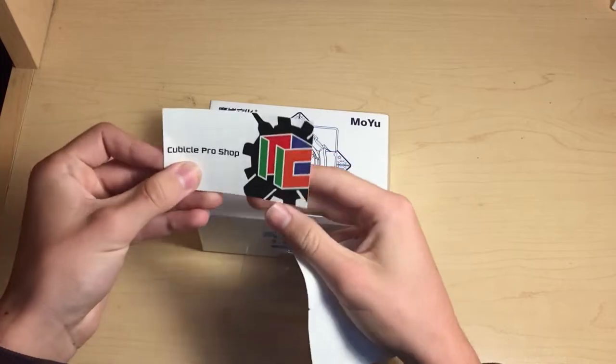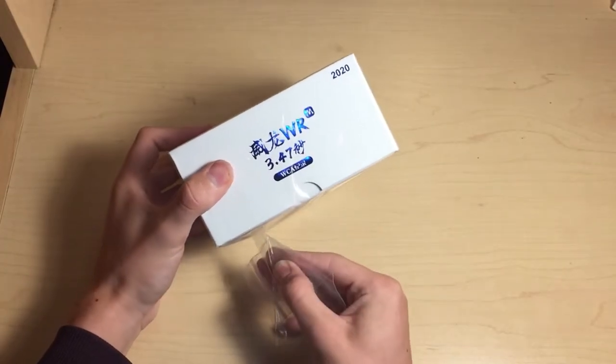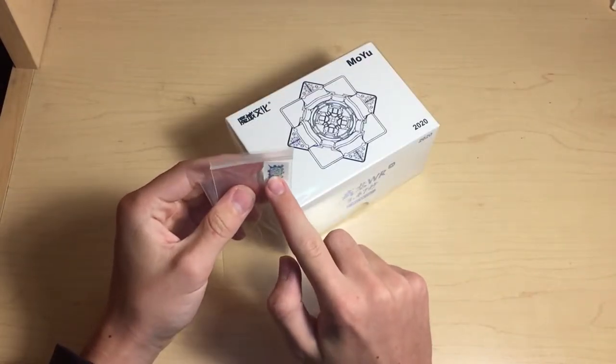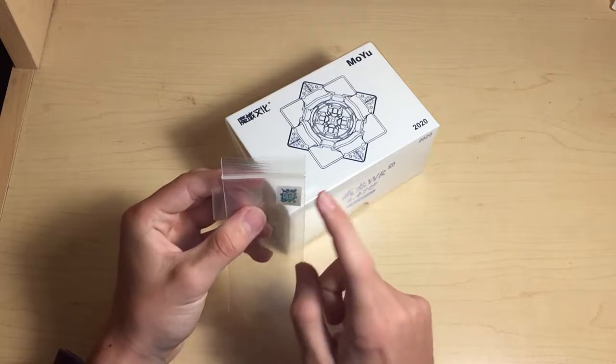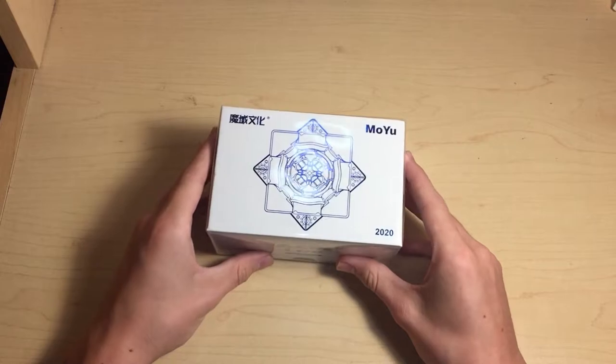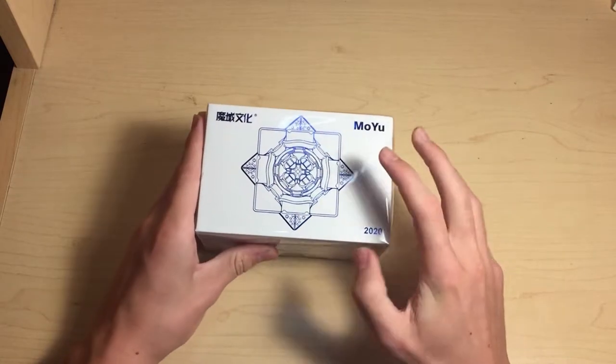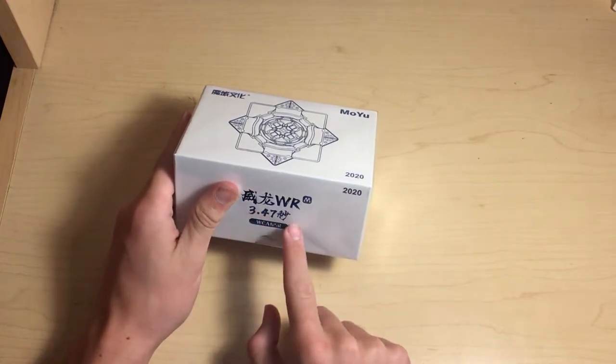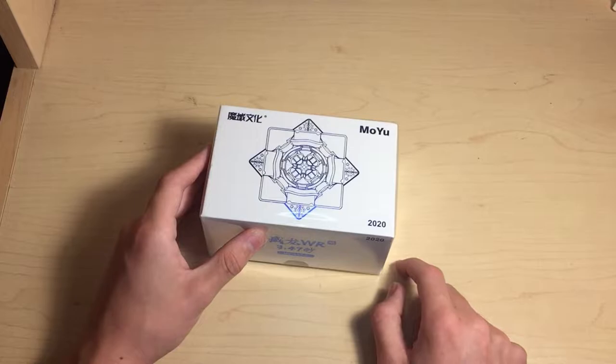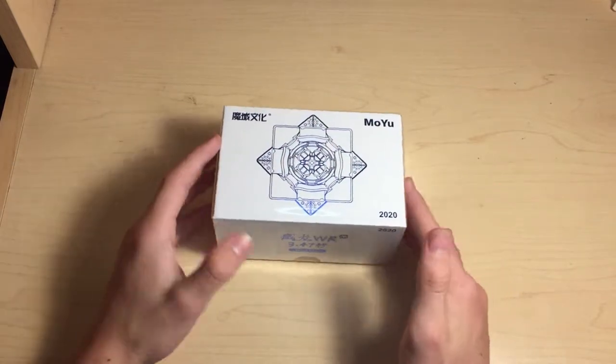A nice little Cubicle Pro Shop business card and it also looks like attached to the box we have a nice limited edition Cubicle Pro Shop logo, so that is definitely very nice. Just taking a quick look at this box, the design is super cool. It's reminiscent of the previous WRM but instead we have this blue text with the 3.47 on there and we have the little 2020 stamp down at the bottom. This design on the top just looks so cool. Let's just go ahead and open it up.